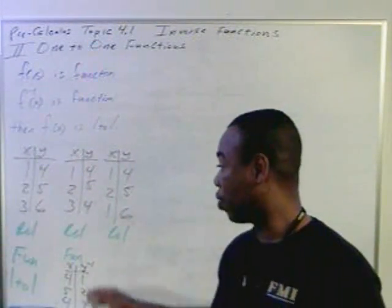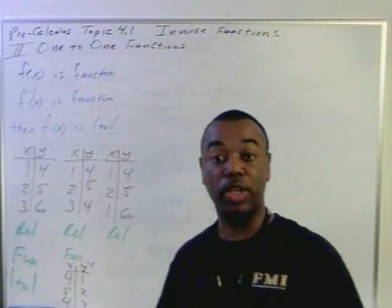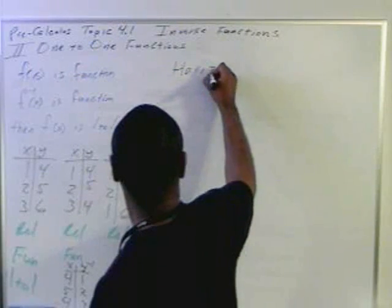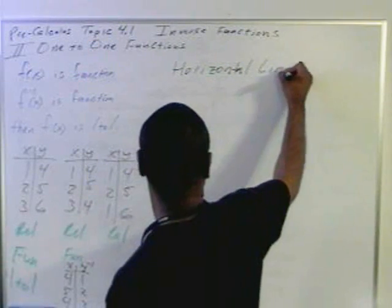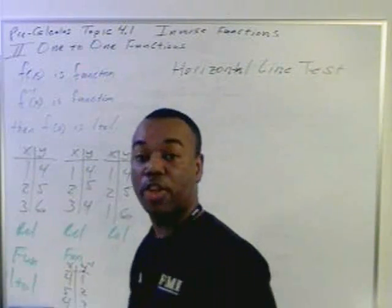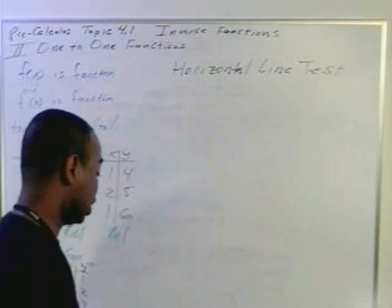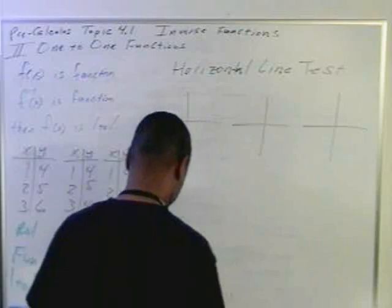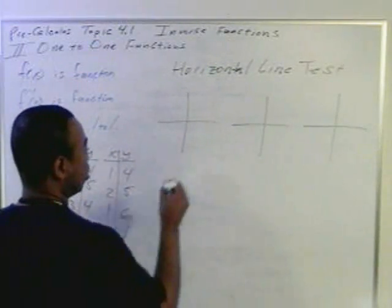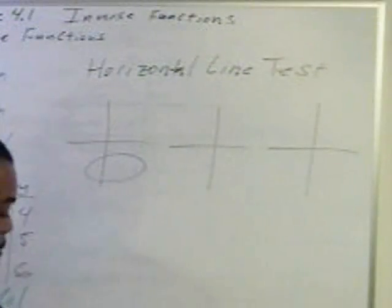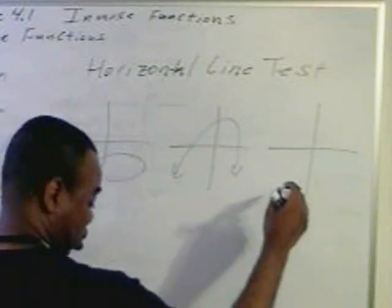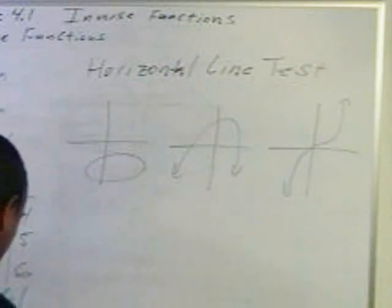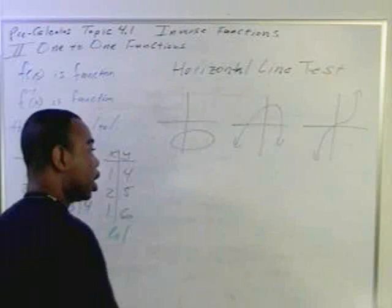There's a second way of telling whether something's one-to-one without seeing the actual points, where we can look at the graph. It's called the horizontal line test. Let's take a look. Here's a relation. Here's a relation.